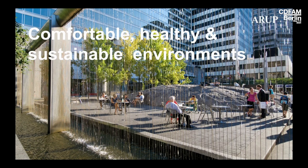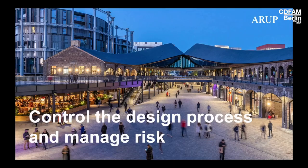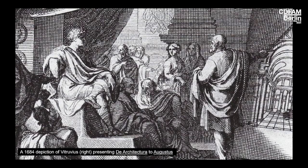So how can we actually design a comfortable, healthy, and sustainable environment where people can enjoy the sun within the built environment, while also controlling the design process and managing risk? Therefore we need to go back a few centuries to Vitruvius, because he wrote about the three principles of design, and historically it can be observed that the dominant stakeholder in the design process will dominate the outcome.